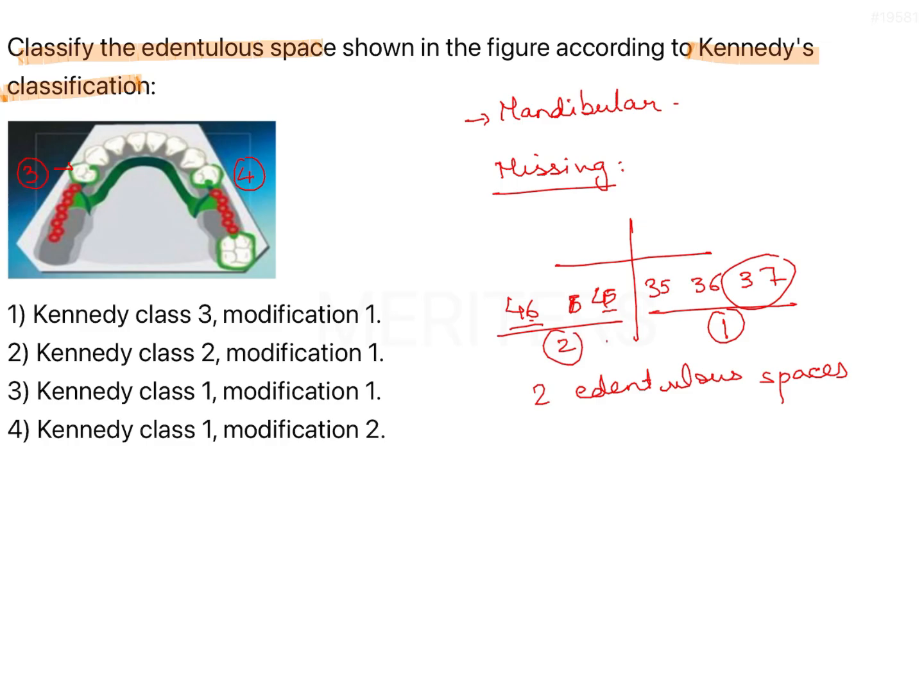Of this, we have to identify which is the posterior most space. So, posterior most space is certainly space number 1, where we have more teeth missing. That will determine the classification.